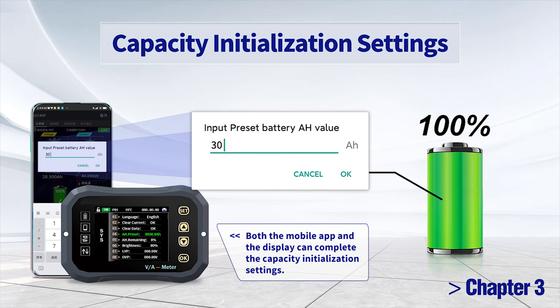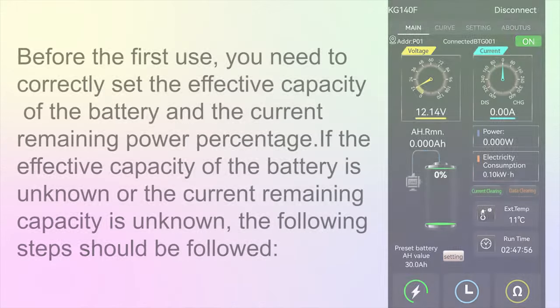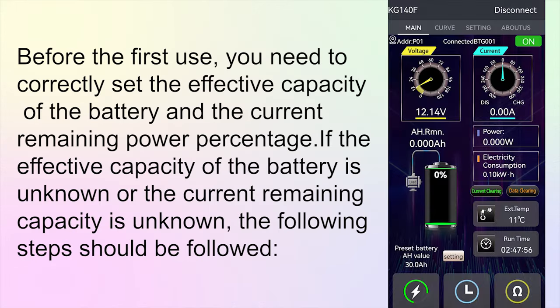Chapter 3: Capacity initialization settings. Both the mobile app and the display can complete the capacity initialization settings. Before the first use, you need to correctly set the effective capacity of the battery and the current remaining power percentage. If the effective capacity of the battery is unknown or the current remaining capacity is unknown, the following steps should be followed.